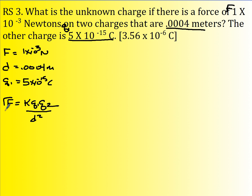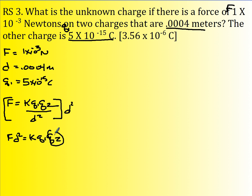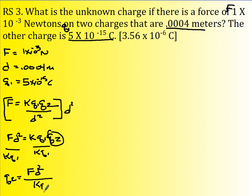Now we need to solve this for q2. We're going to multiply the whole thing through by d squared, so f times d squared equals k q1 q2. I'm still looking for q2, so I've got to divide both sides by k and q1. So q2 equals f times d squared divided by k times q1.